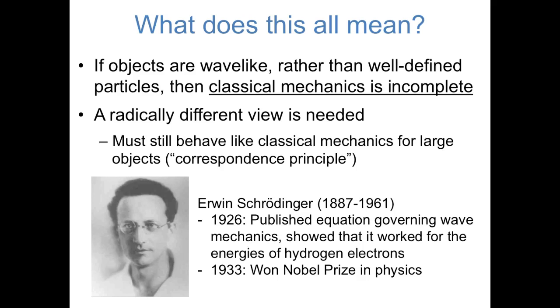The scientist who was most important in developing quantum mechanics, who we'll hear more about next time, was Erwin Schrödinger. In 1926, Schrödinger published the equation that governs quantum mechanics, which is now called the Schrödinger equation, and showed that it worked to explain the energies of hydrogen electrons, the energies that we saw in the Rydberg equation previously. And like the other scientists that we've talked about, Schrödinger won the Nobel Prize in Physics in 1933. So that sets the stage, and in future videos, we'll be talking about how quantum mechanics actually works.